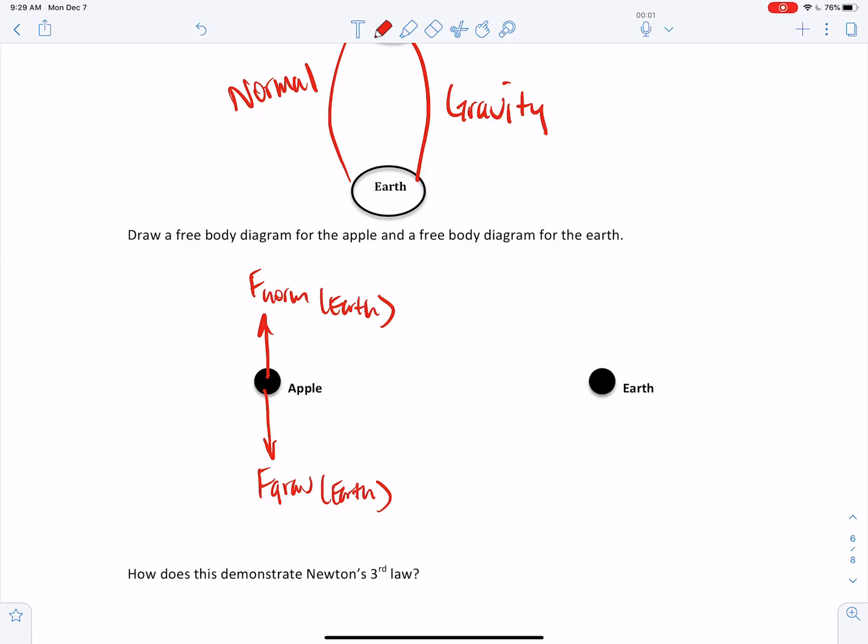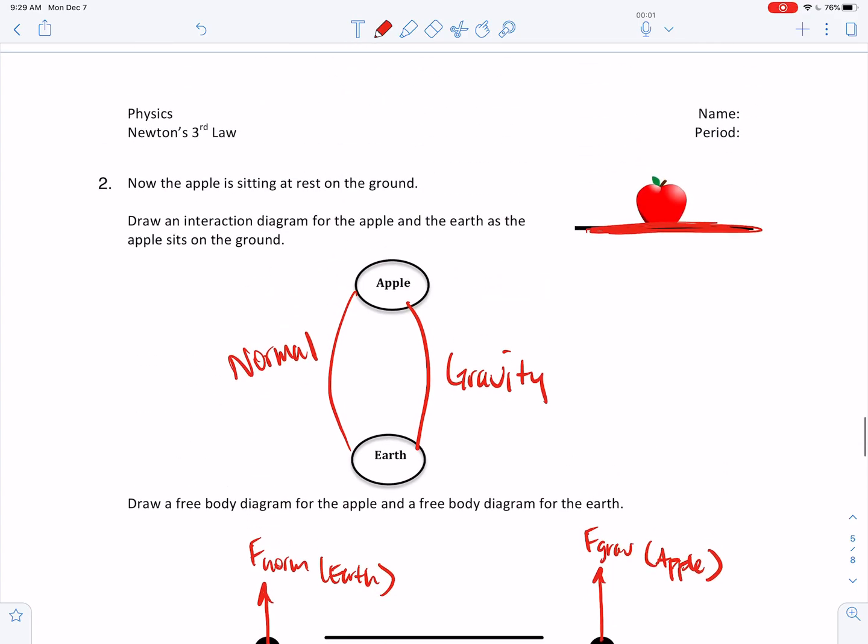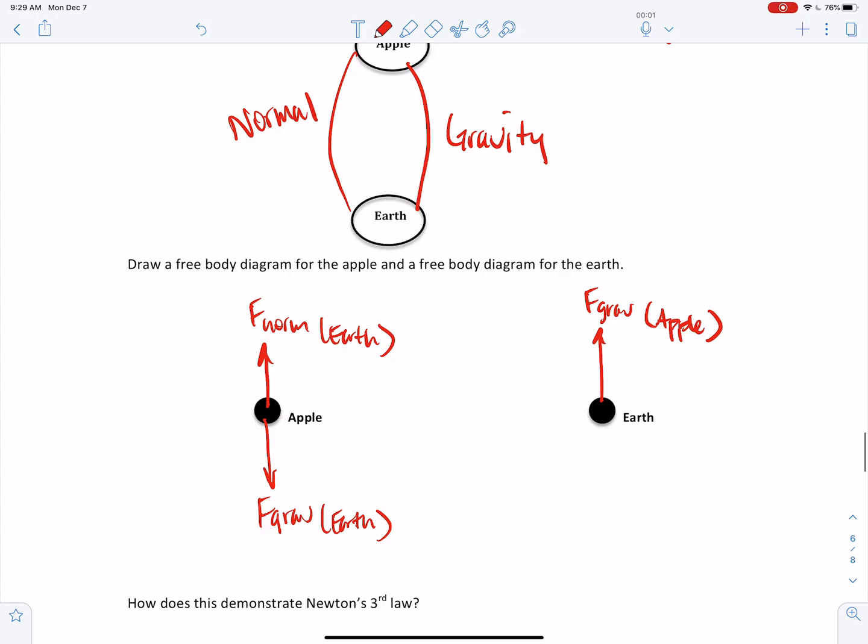And then equal and opposite to those are the forces on the earth. So now the earth is going to be pulled up from a gravitational interaction with the apple. But since the apple is sitting on top of the earth, right? The apple wants to move down because of the force of gravity. But then there's this support force upwards. So the earth is actually going to be pushed down by a normal force from the apple, right? Imagine that you're the earth. You would feel the apple sitting on you, pushing down on you.